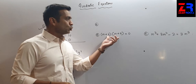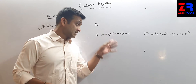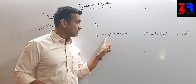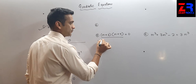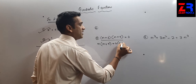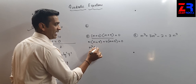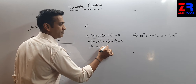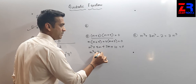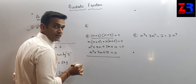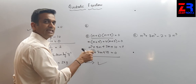Question number 5 has two brackets: (m+2)(m+5) = 0. I cannot directly decide whether this is a quadratic equation, so I need to expand the brackets. Multiplying: m·m + 5m + 2m + 10 = 0, which gives m² + 7m + 10 = 0. Here the power of m is 2, so this is a quadratic equation.